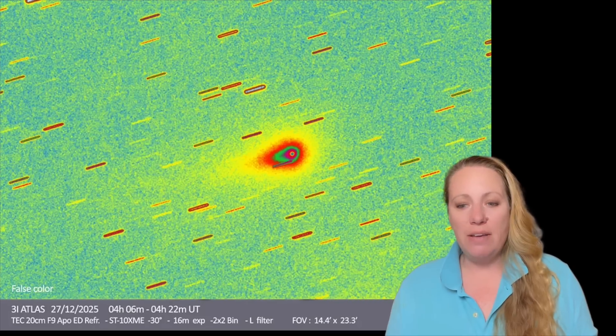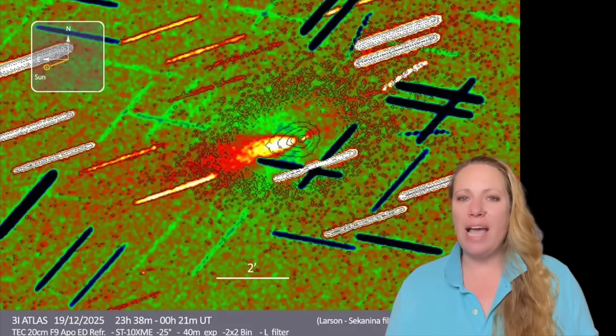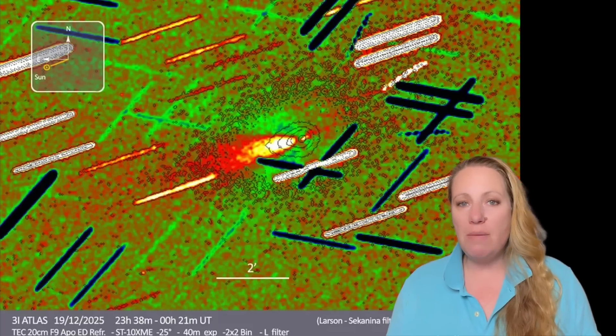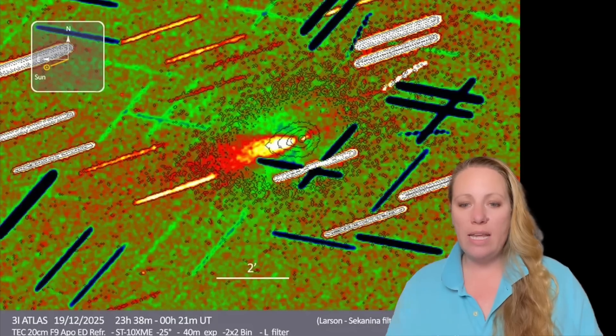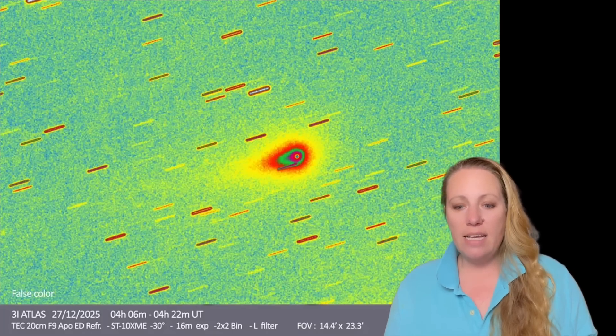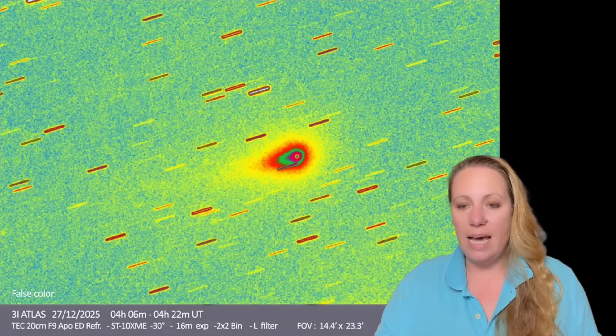We have new images from December 27th and we will also look at another image when it was closest to Earth from December 19th. And it's stunning what we see on these images. So let's start with the first one. That is the image from December 27th, and then I'll show you quickly the other one.